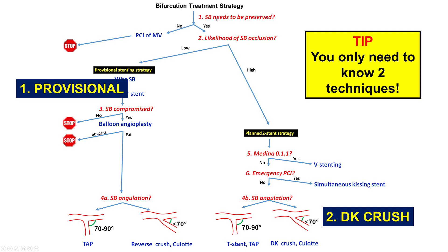If the side branch is too small and it is not necessary to preserve it, then doing a provisional stent — stenting the main vessel — is the way to go. If the likelihood of occluding the side branch is low, provisional is the way to go. But if there is a high likelihood of losing the side branch, that's when a two-stent strategy is preferred.